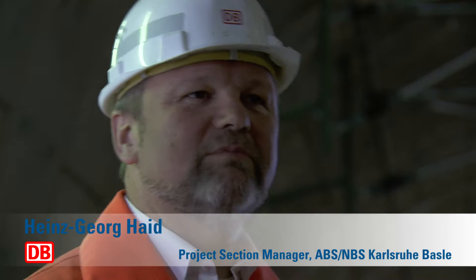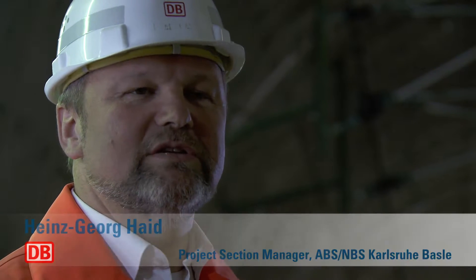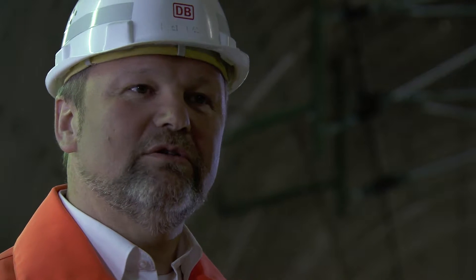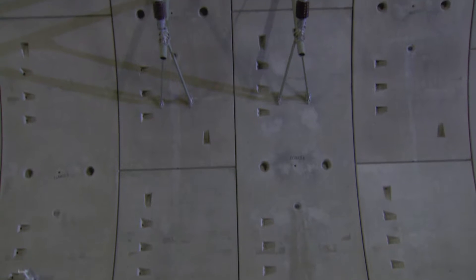What's innovative here in the Katzenberg tunnel is that we were able to do without any anchor rails, that is, support rails for fixing the overhead contact line. Instead, at precisely determined drilling locations, anchors are being attached to the tunnel segments.